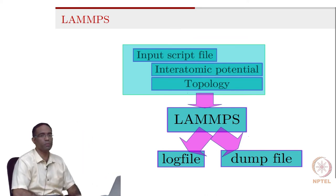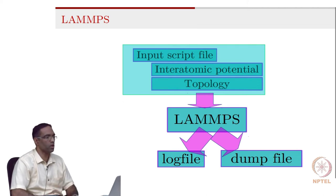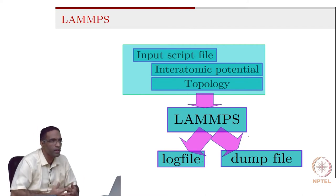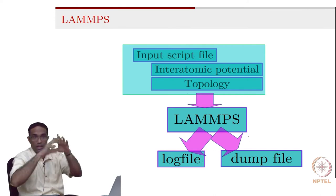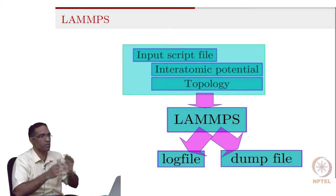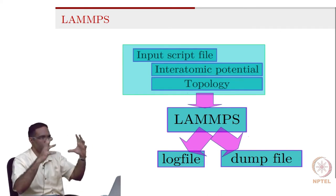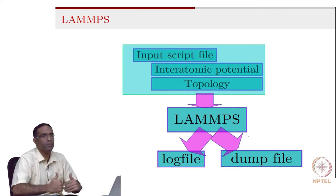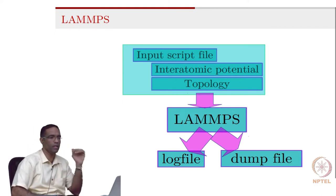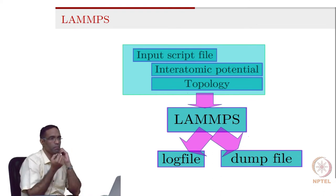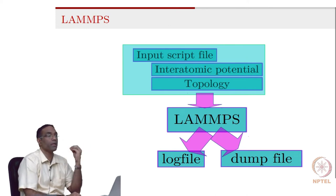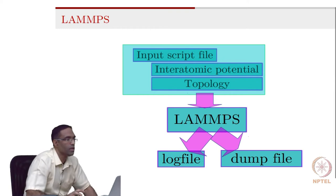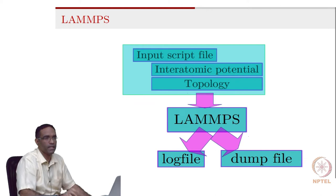Once you give this information to LAMMPS, it reads and understands what to do, and at the end it prints out several files. One file is called the log file, which contains thermodynamic information for the entire system - for example, the pressure, temperature, and stress components of the entire simulation box. The dump file contains per-atom information, like atom coordinates as a function of time, atom velocities, or per-atom stresses. You can choose from the input script what you want to print out.